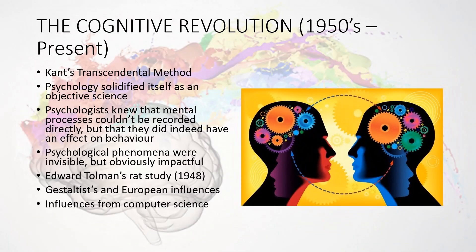Cognitive psychology began in the 1950s and still dominates the field today. It started with the introduction of Kant's transcendental method — basically a method where you make a hypothesis and then find evidence to support or disprove it. Instead of trying to uncover unconscious mental processes directly, which was quite impossible at the time, you could study them indirectly, infer theories, and then work backwards to find supporting evidence. This certainly solidified psychology as a science.